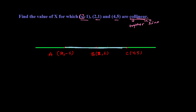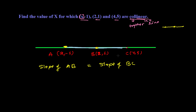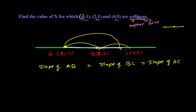Since the points are collinear, the slope of AB and slope of BC should be the same — we can equate them. Similarly, the slope of AC will also be equal to these, because two line segments are connected and all three slopes must be equal.